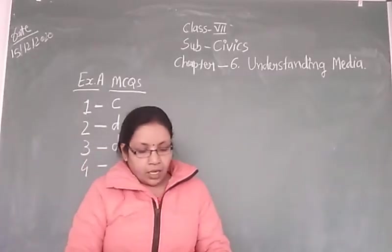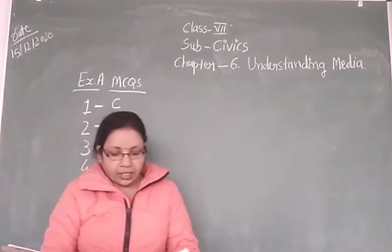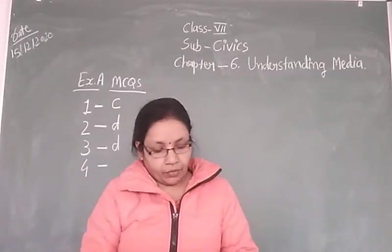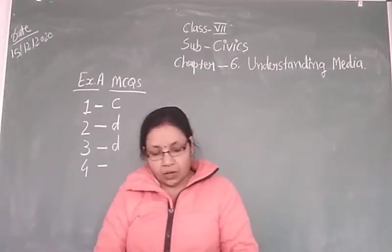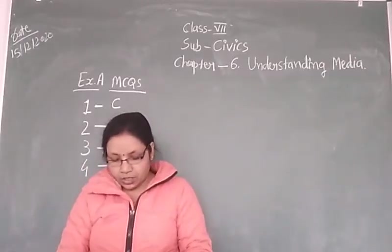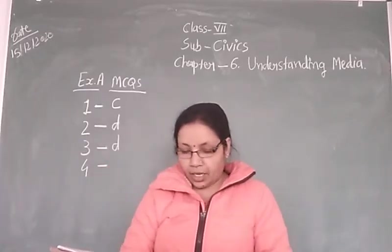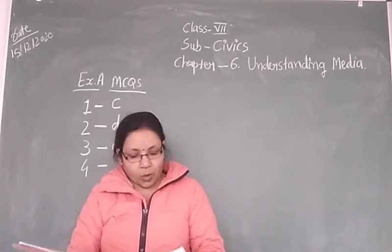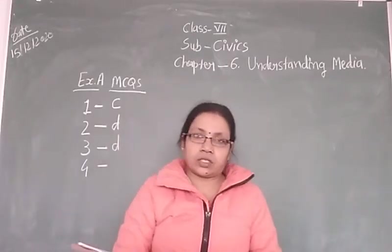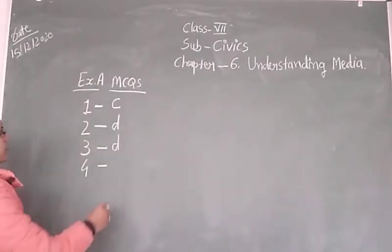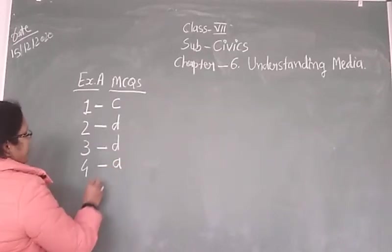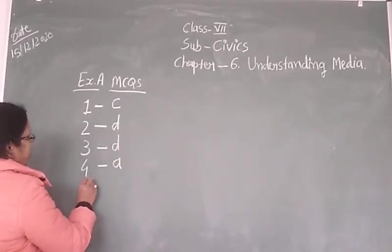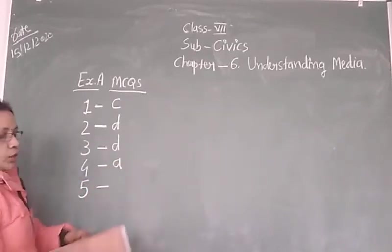Now fourth one is: newspapers and TV channels are controlled by. We have options: big business houses, small business houses, bureaucrats, and defense personnel. Our correct option is big business houses. So option A is the correct option for question 4.